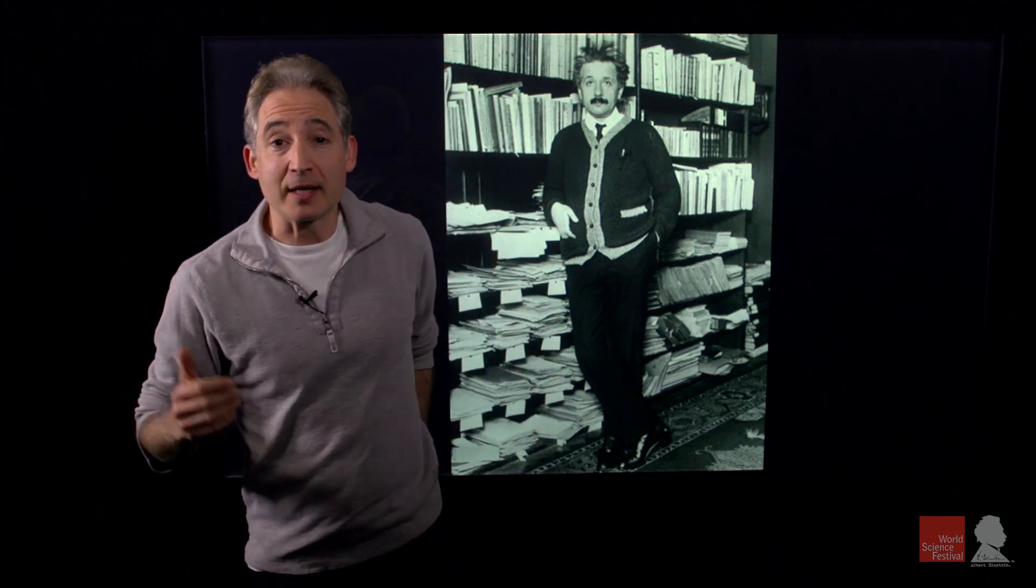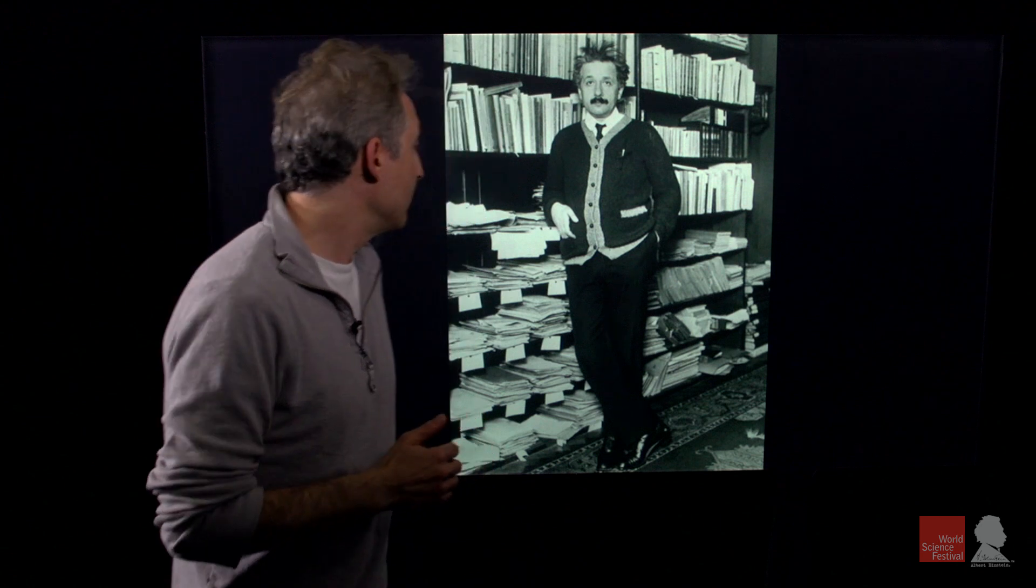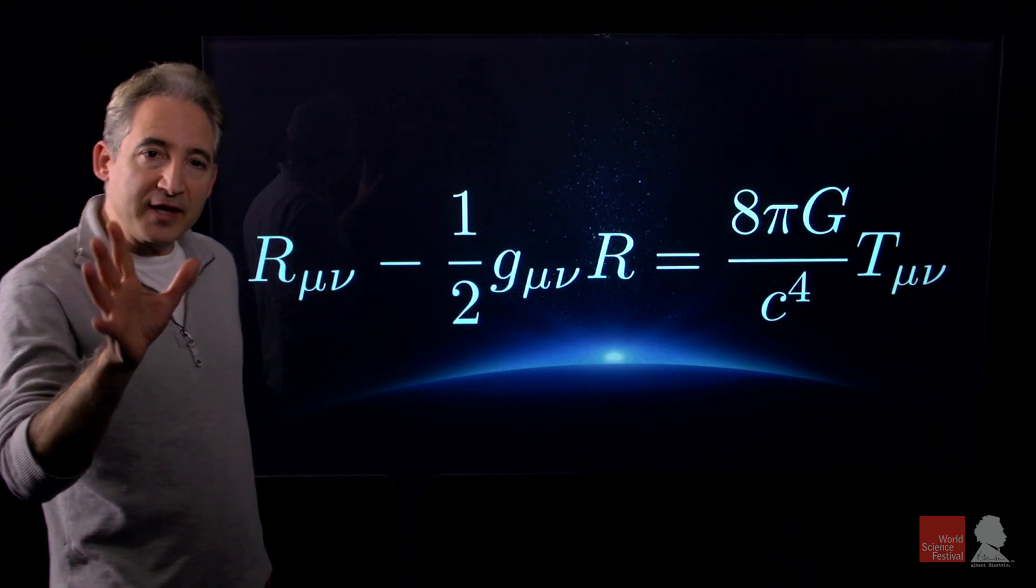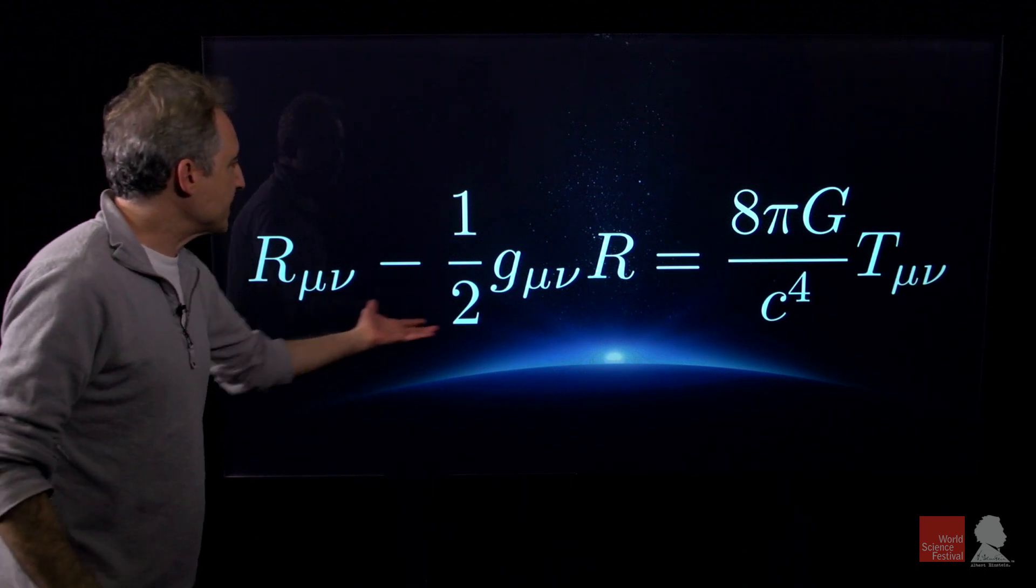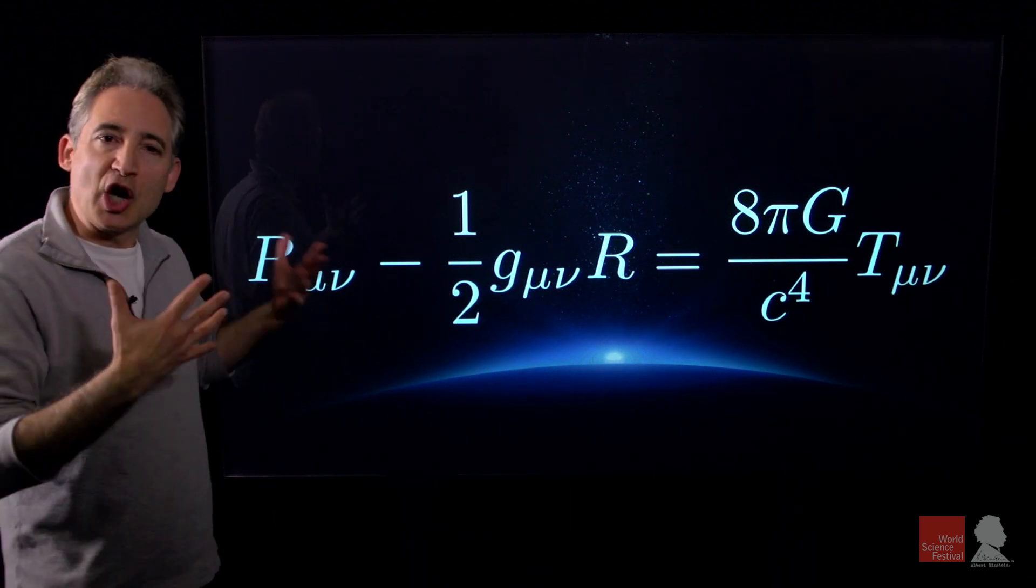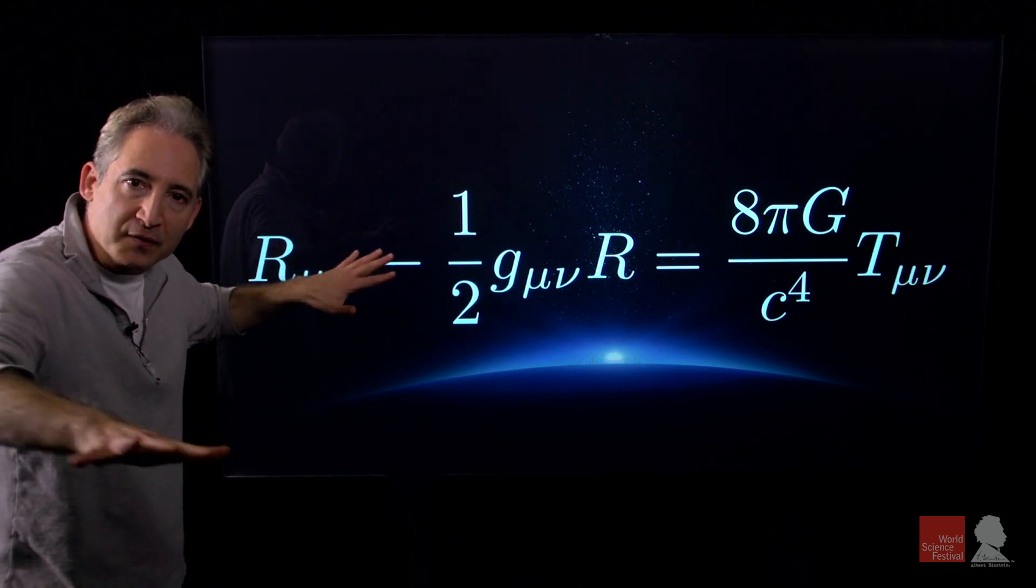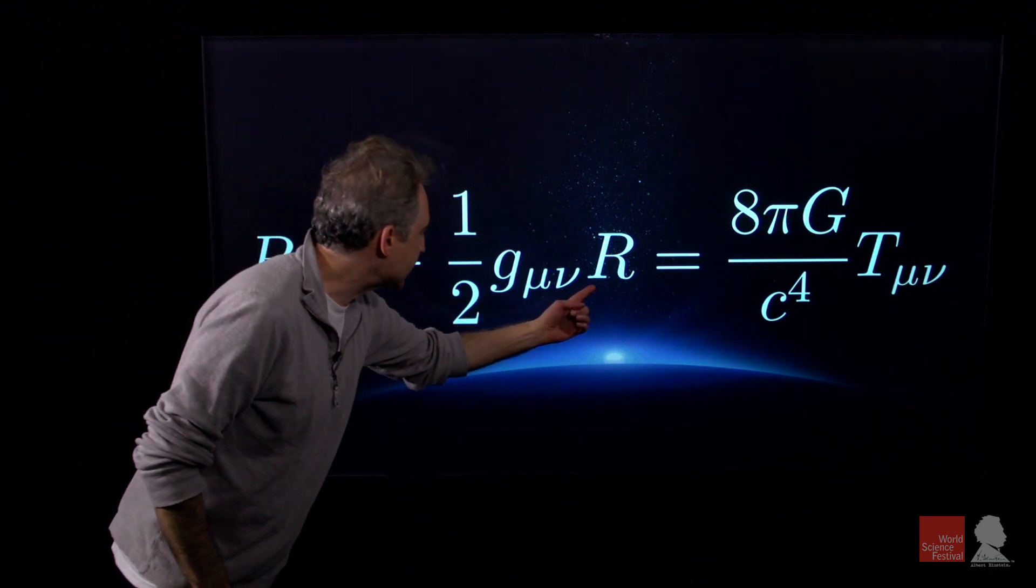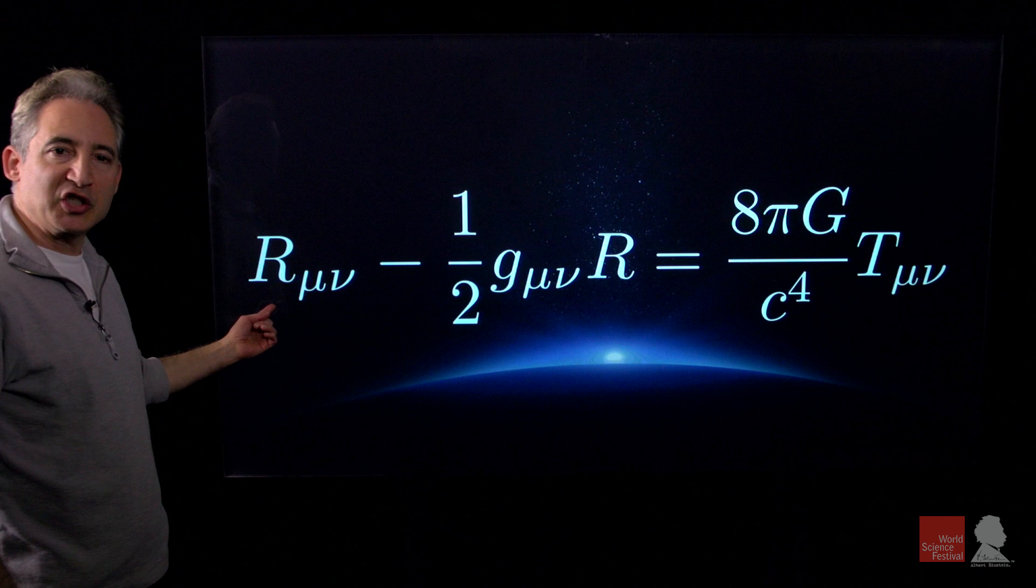And the equations that he announced that day, they're quite beautiful. Here they are. These are known as the Einstein field equations. The left side here describes geometry, warps and curves in space and time. This is known as the metric tensor, the scalar curvature, the Ricci tensor.